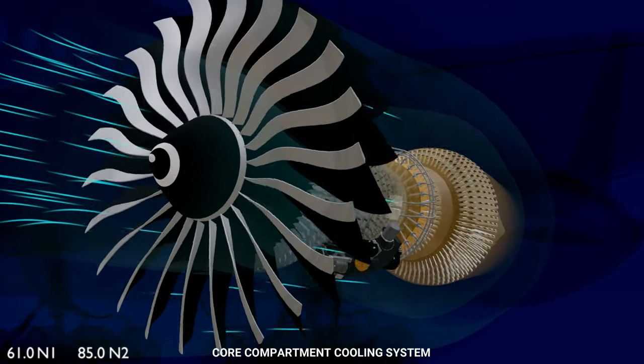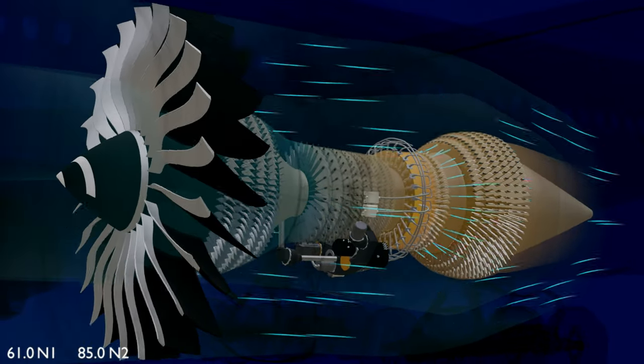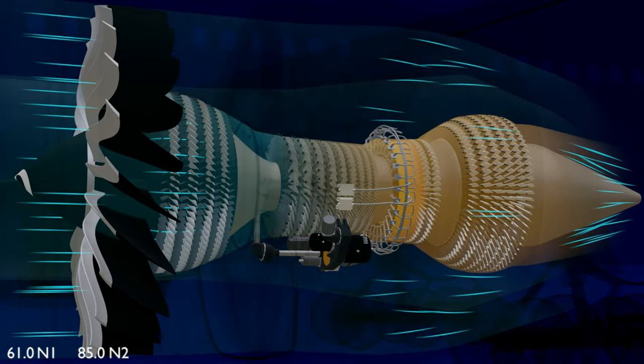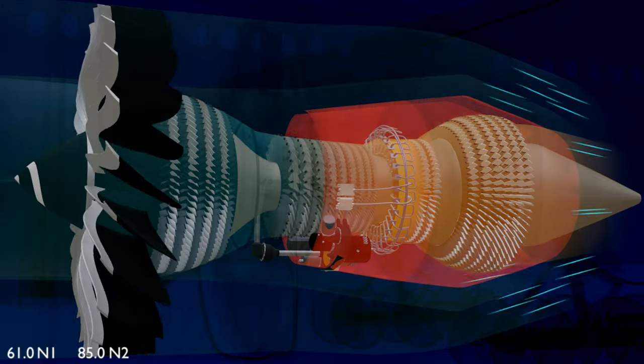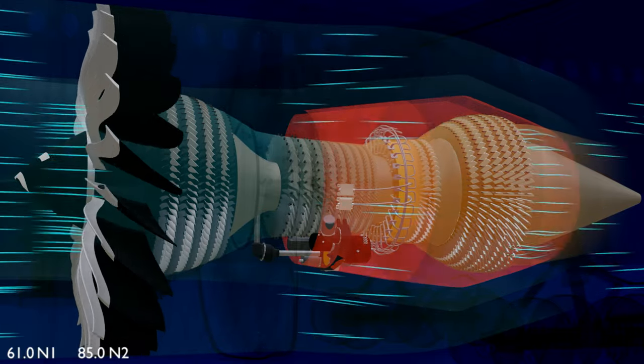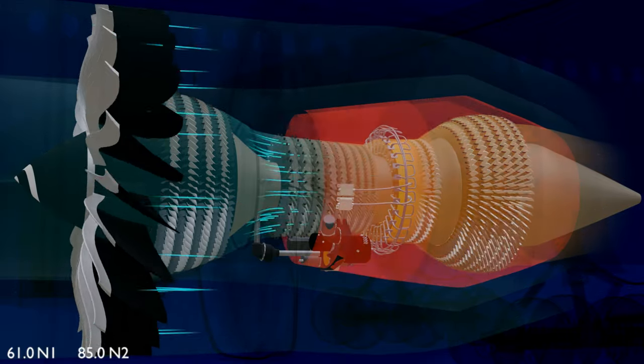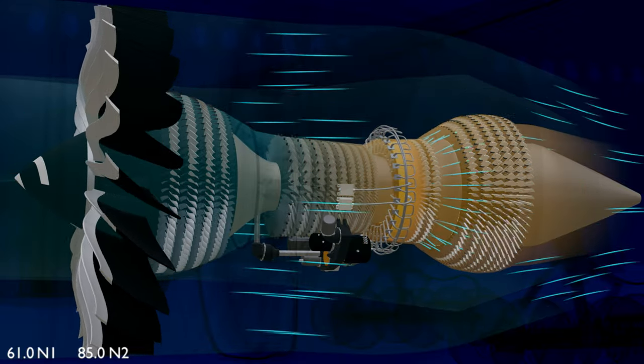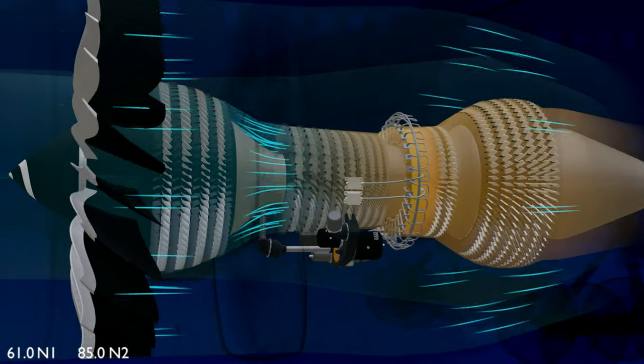Core compartment cooling. The temperature outside the core section of the engine can increase due to conduction and convection. Majority of the engine components are in the core section. Prolonged functioning in high temperature zone can reduce the service life of the components.